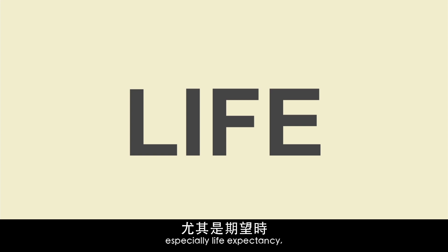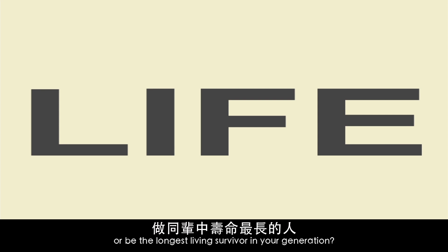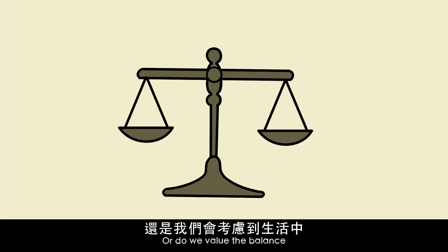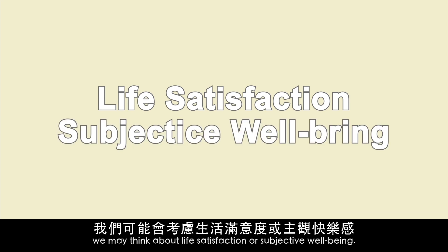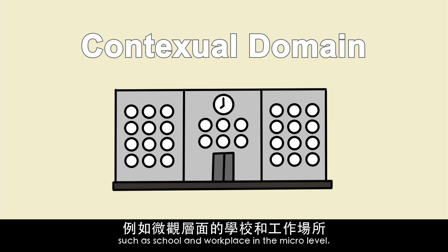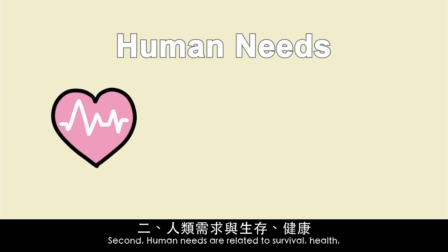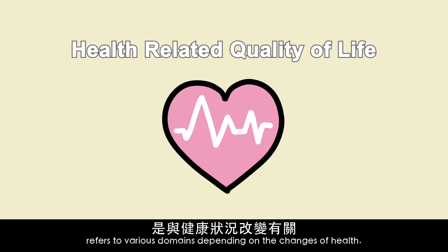When we talk about life, especially life expectancy, we may think: what is more important — quantity or quality? Do we prefer to live as long as possible, or do we value the balance between the quantity and quality of our living, so that we can have an endured life as well as a reasonable quality of life throughout the course of our lives? In the scope of our overall life, we may think about life satisfaction or subjective well-being. There are three domains to consider: the contextual domain, which refers to the surrounding environment such as school and workplace at the micro level or whole society at the macro level; human needs, related to survival, health, intimacy, and achievement; and health-related quality of life, which refers to various domains depending on changes in health.